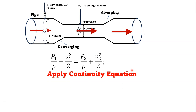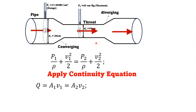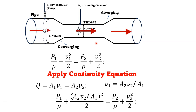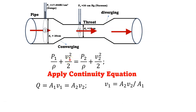Applying the continuity equation between points 1 and 2: Q = A1·V1 = A2·V2. Since water is the working fluid, ρ1 = ρ2, so discharge Q = A1·V1 = A2·V2. From this, V1 = A2·V2 / A1. We substitute this expression for V1 into Bernoulli's equation.